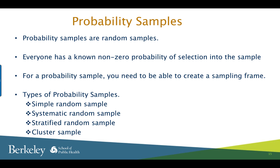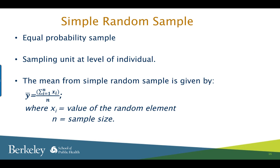We will talk about four types of random samples: the simple random sample, systematic random sample, stratified random sample, and cluster sample. In a simple random sample, each individual from the sampling frame has an equal probability of getting selected — it can also be referred to as an equal probability sample. The sampling unit is at the level of the individual. You can obtain a simple random sample by assigning random numbers from a random number generator to individuals in the sampling frame. You can calculate the mean from a simple random sample using the formula provided. Having a sampling frame is necessary, and it is usually easier to create one for smaller and findable populations.